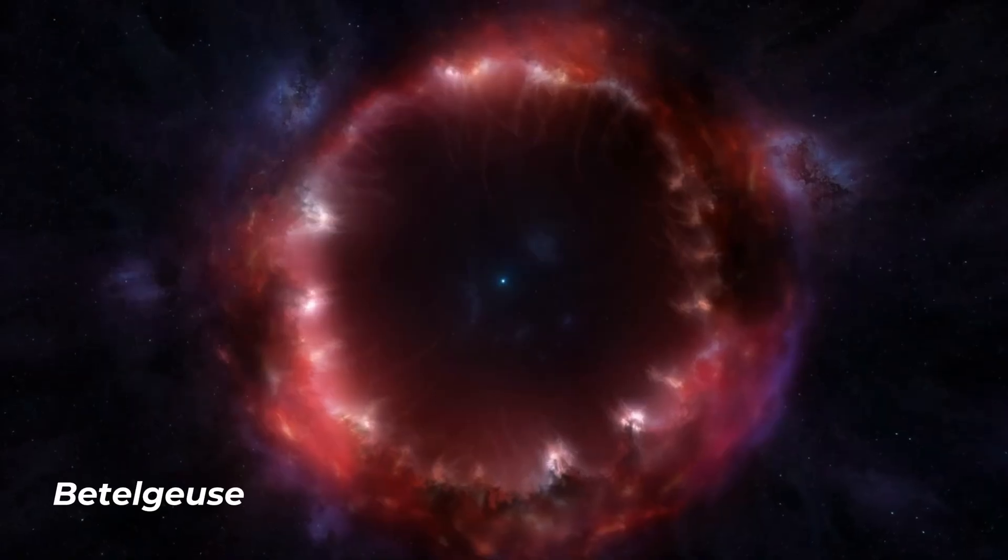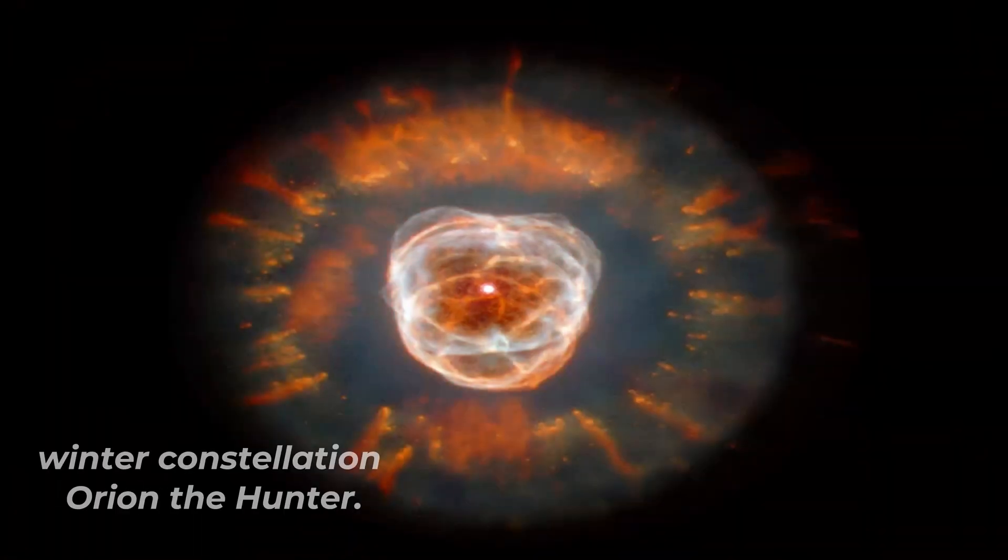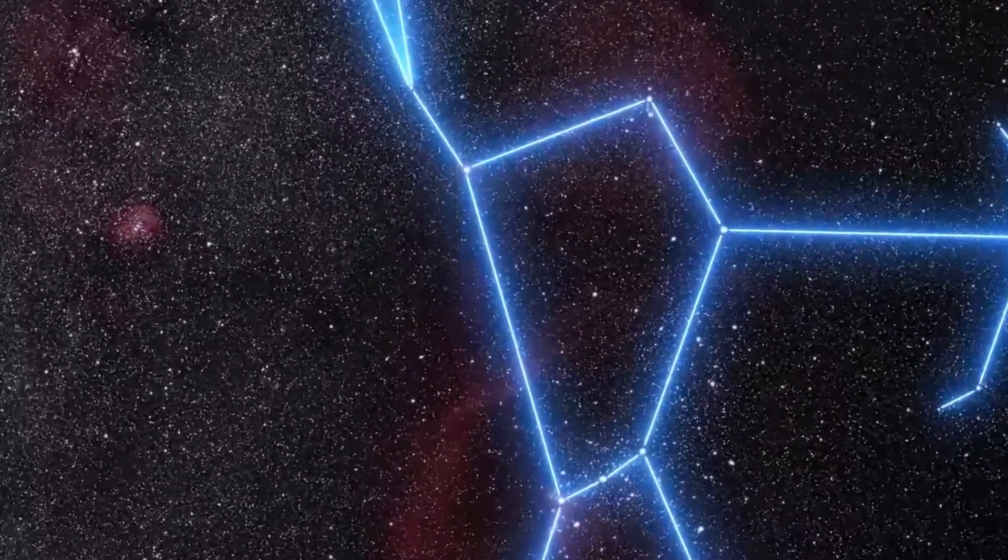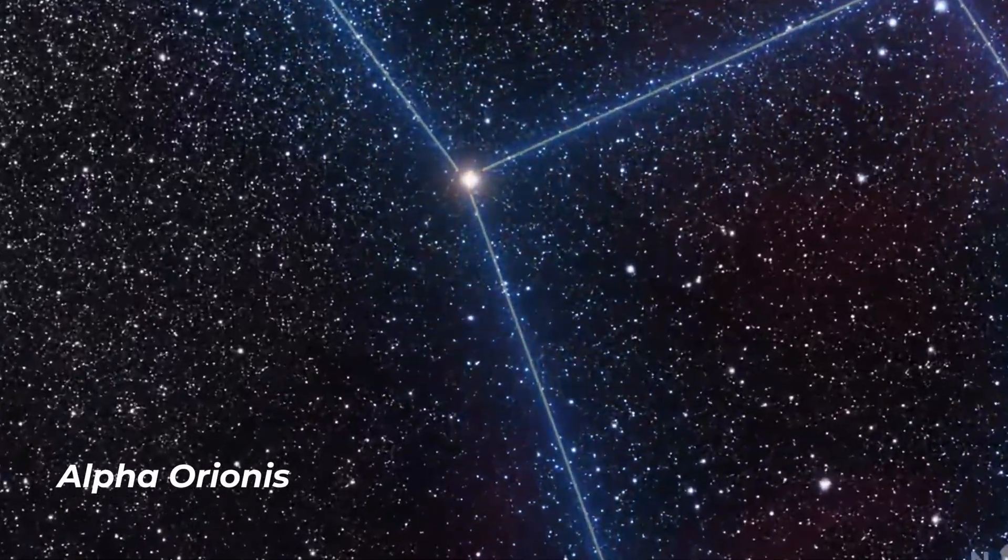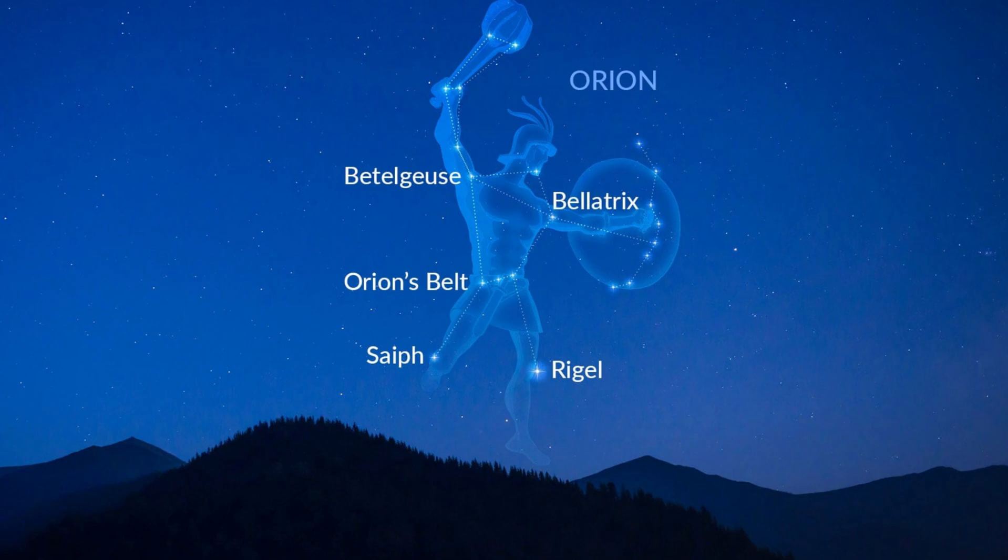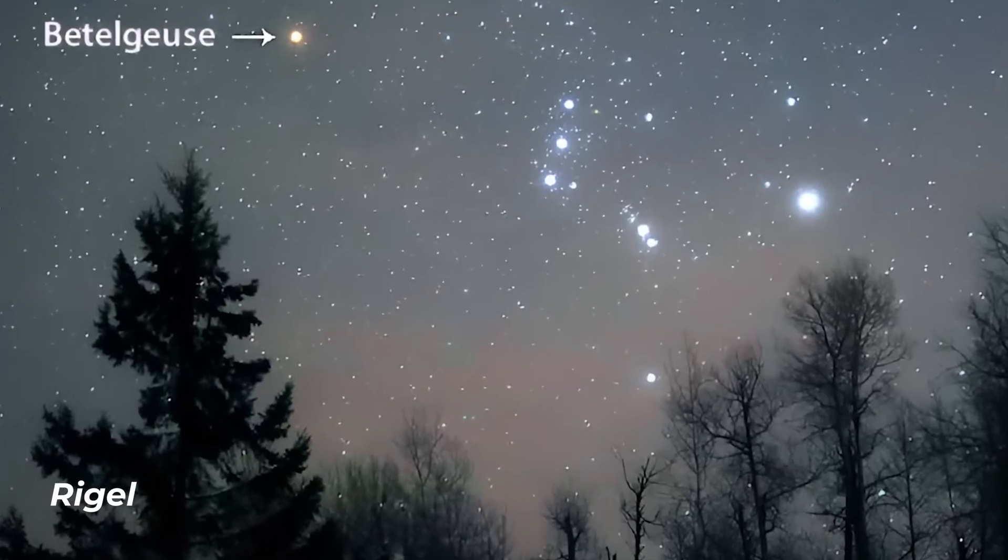The brilliant ruby-red star Betelgeuse is located in the upper right shoulder of the winter constellation Orion, the Hunter. You may know it better by its alternative name, Alpha Orionis, but it is the second brightest star in the constellation, directly behind the blue supergiant Rigel.